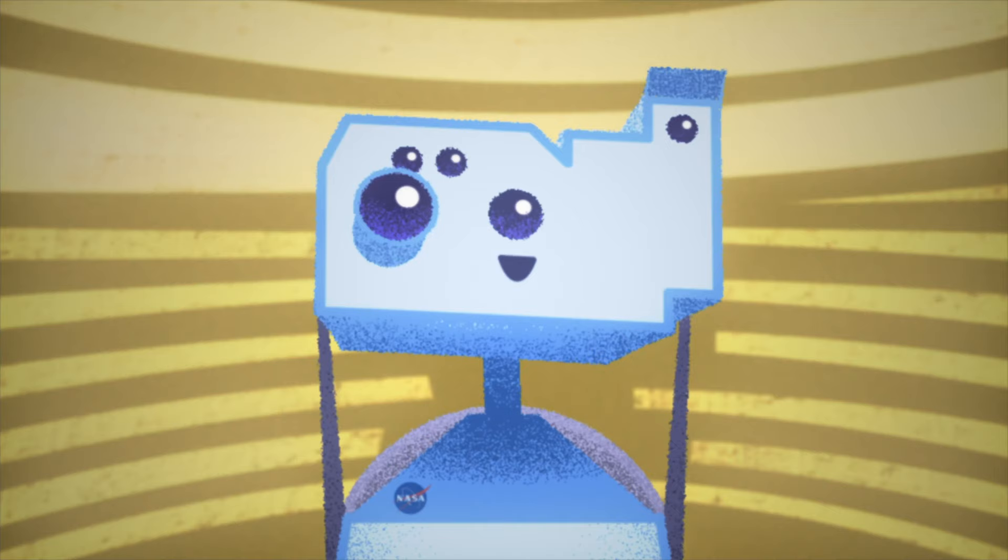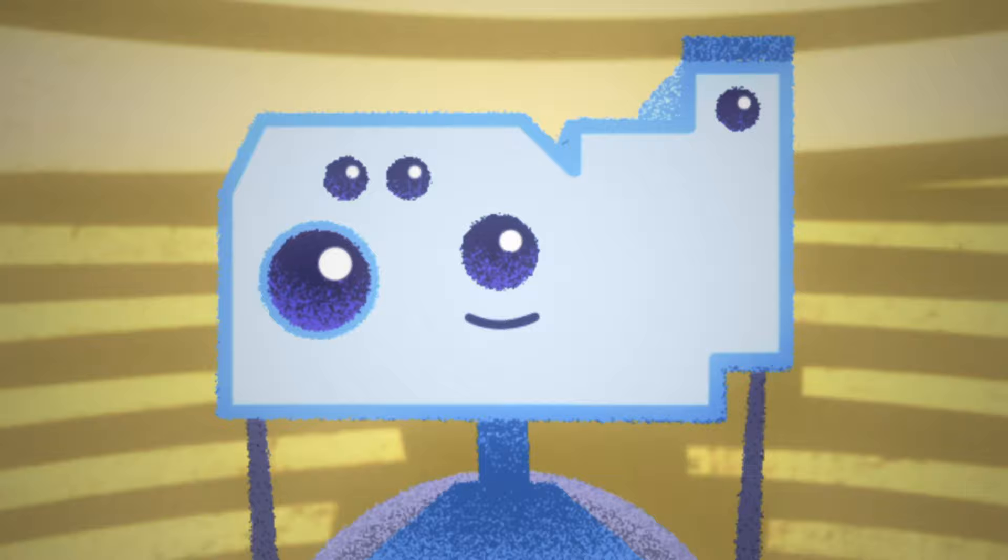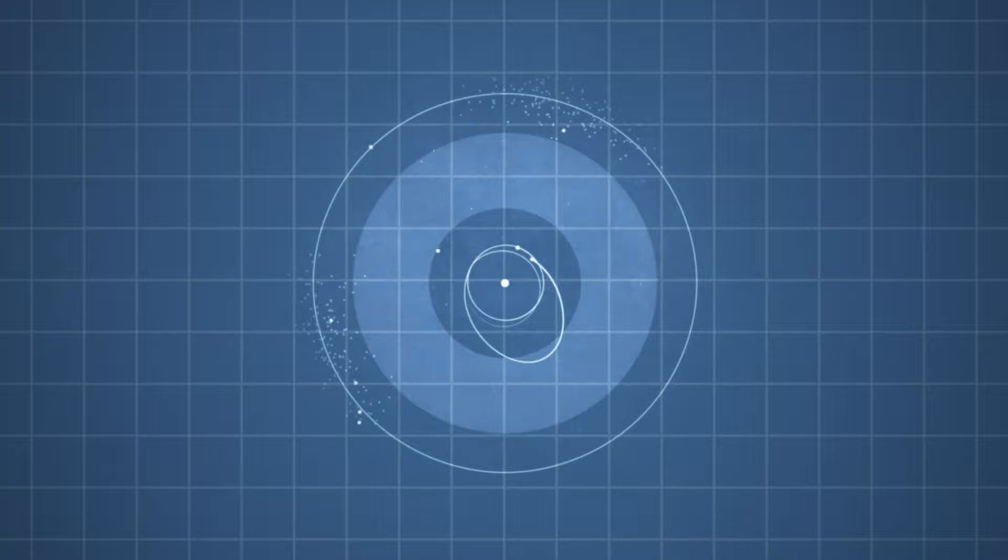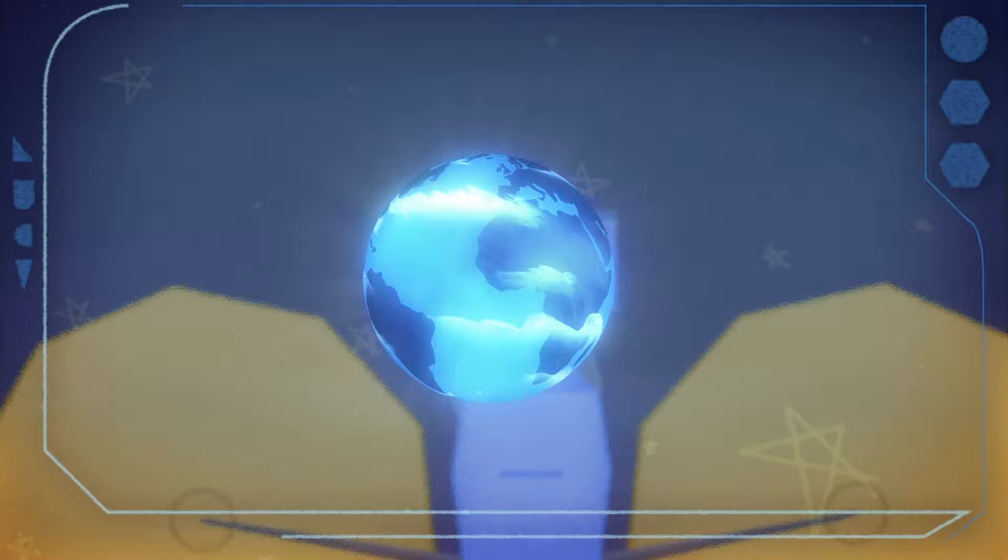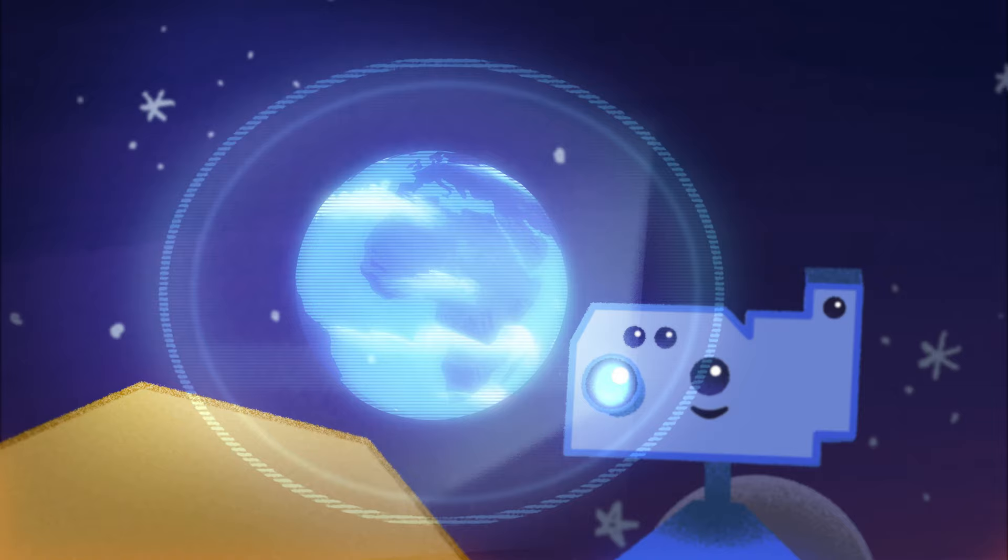And we do that with this very complicated dance, particularly in the beginning, where we are using the Earth actually as a gravitational slingshot. So Lucy will start off in an orbit very similar to the Earth. And then gravitational encounters with the Earth will actually pump it up so it gets out to the Lagrange points near Jupiter's orbit.